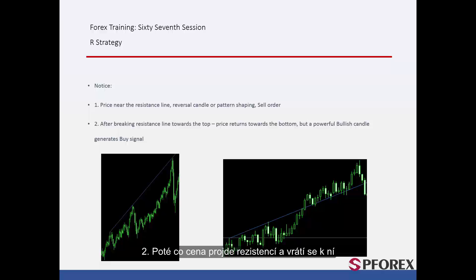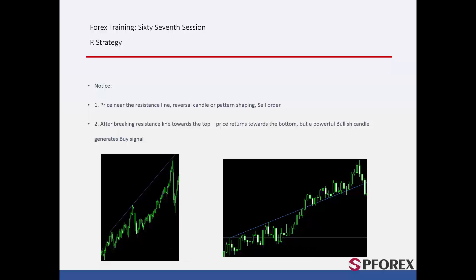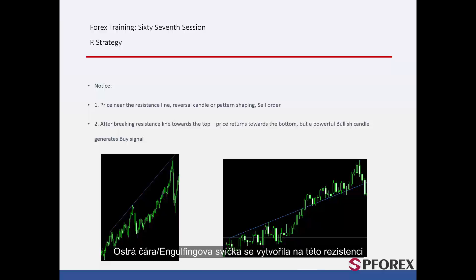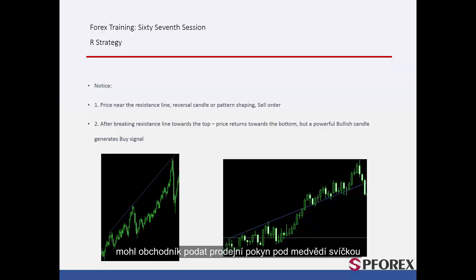After price passes the resistance line and returns towards it, if a powerful bullish candle forms on the resistance line, then a reliable buy signal will be generated. On the right graph, market price has passed the resistance line and could not pass this line towards the bottom after the price had returned towards it. A piercing line or engulfing candle has formed on this resistance line, so a trader could place a buy order. After price crossed the resistance line towards the bottom, a trader could place a sell order lower than the bearish candle.